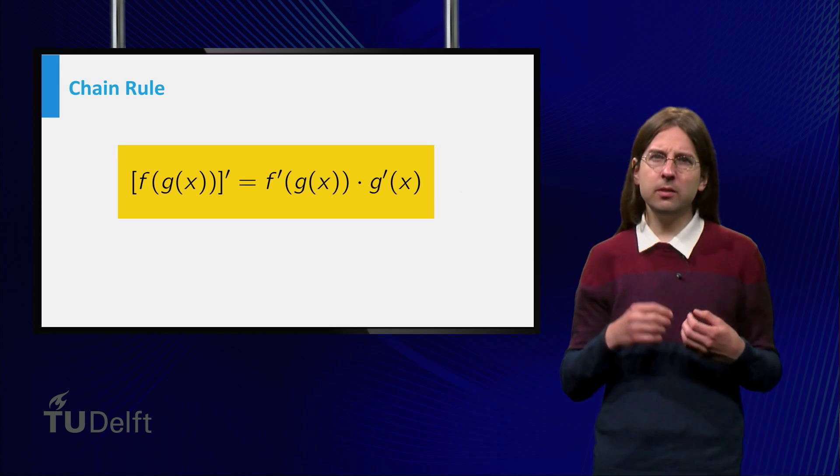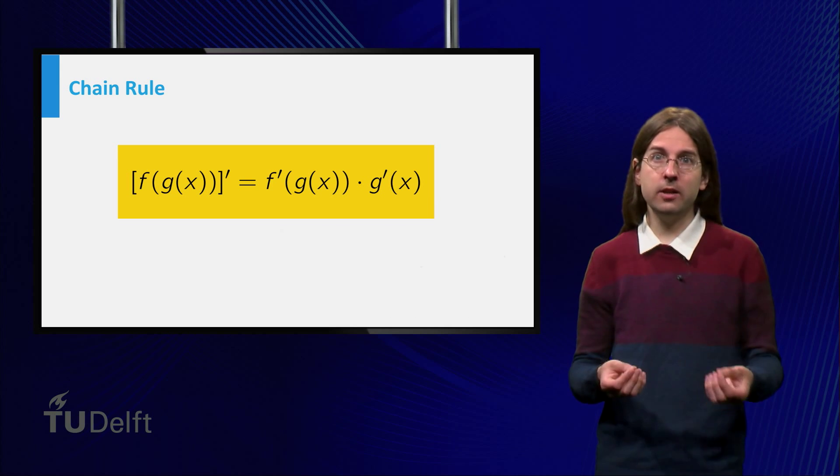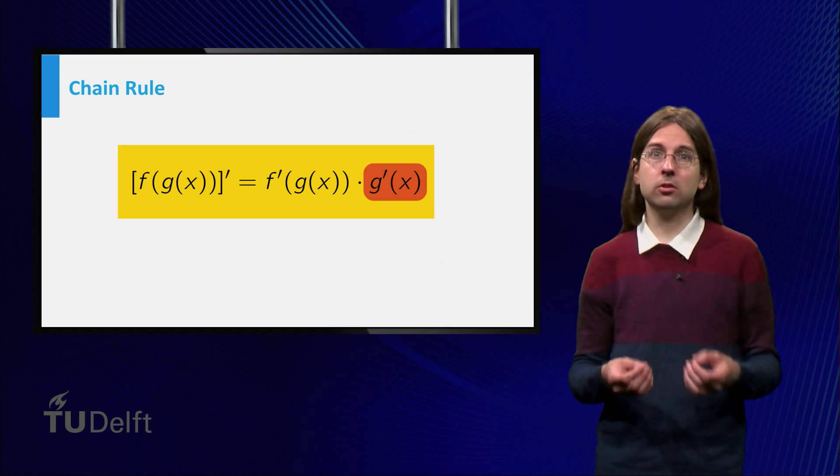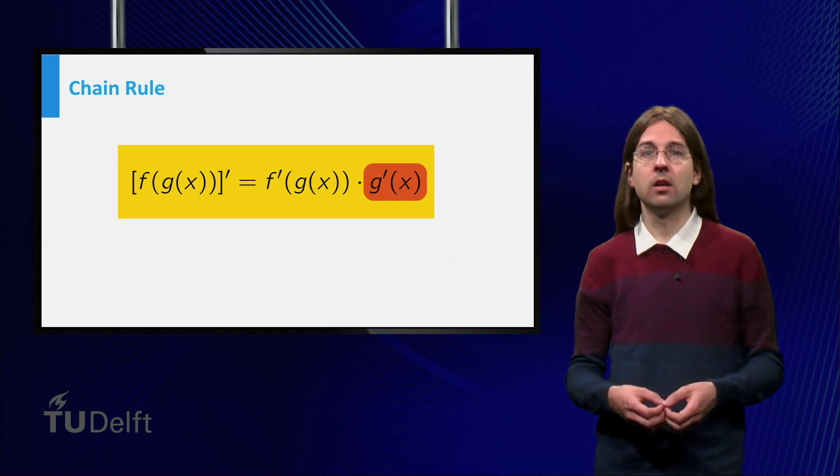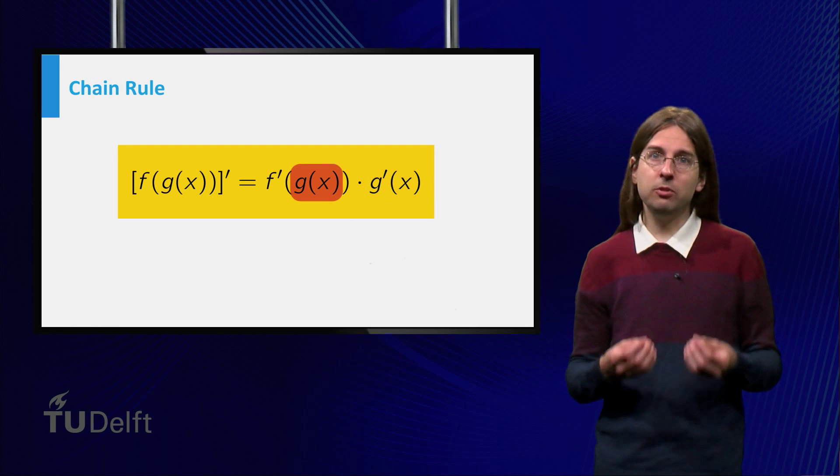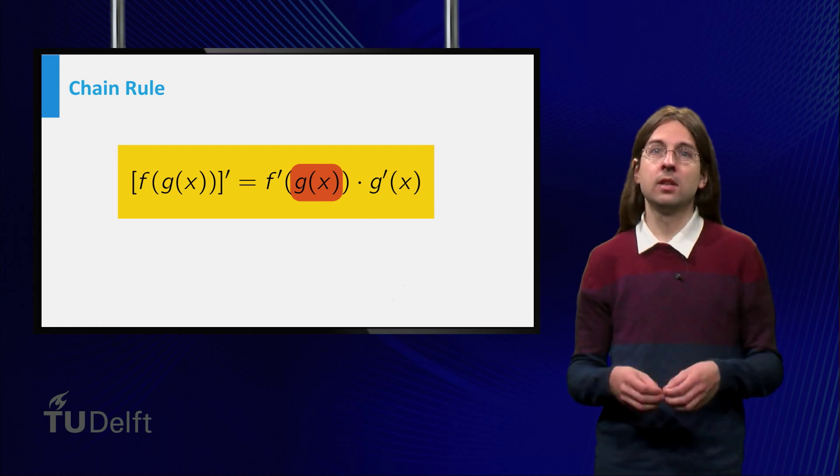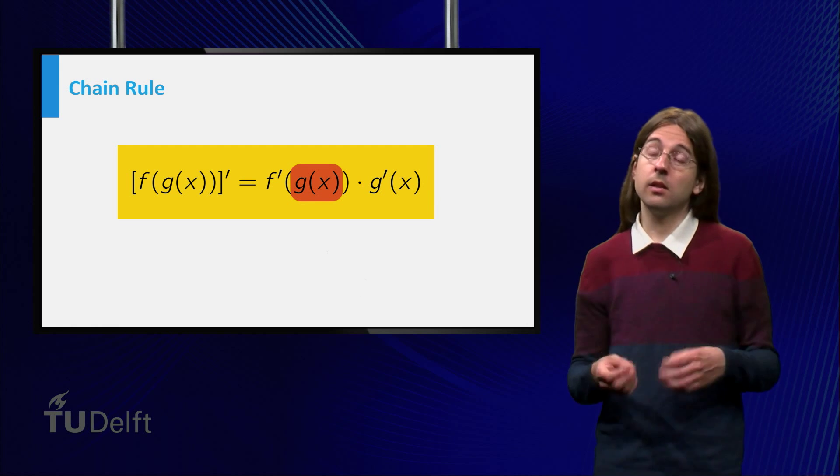There are two frequent mistakes made when using the chain rule. The first one is to forget the factor g prime. The second one is that we need to evaluate the derivative of the outer function f at the value g and not at x.